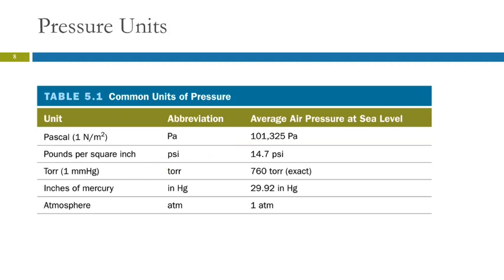PSI is something we use more in everyday life. If your tire is getting flat and you need to pump it up, you need to know how many PSI to use — you don't want to explode the tire. Average atmospheric pressure is 14.7 pounds per square inch. PSI stands for pounds per square inch — force divided by area. One atmosphere is 14.7 PSI.